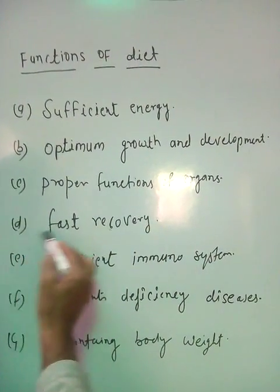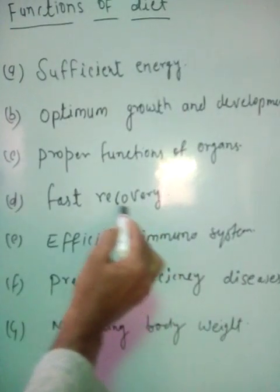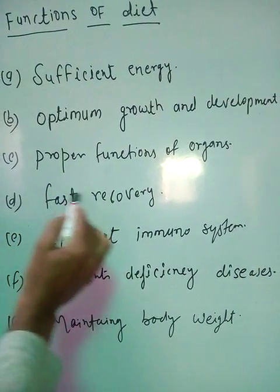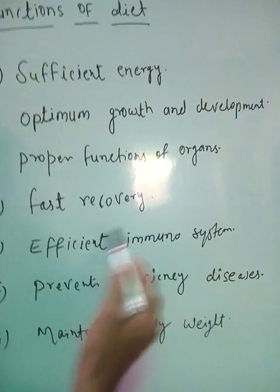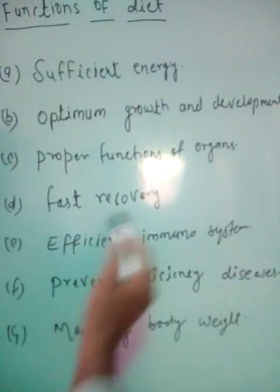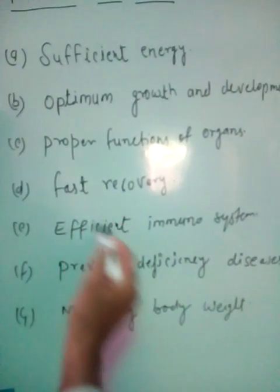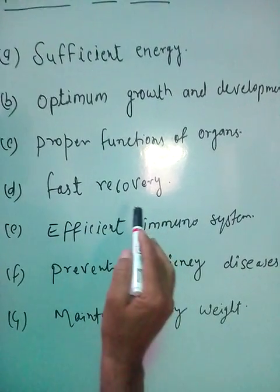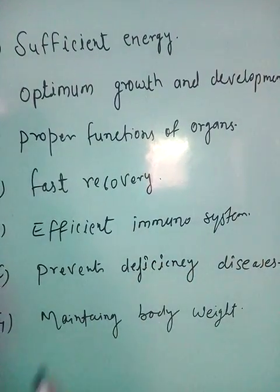Next comes fast recovery. Balanced diet helps to repair or replace worn out tissues and allows faster recovery from injury. Sometimes we unfortunately get injured, and in that case, if you are taking a balanced diet, recovery is faster. Even doctors suggest eating particular foods - that is all because doctors are guiding us to take a balanced diet for faster recovery.